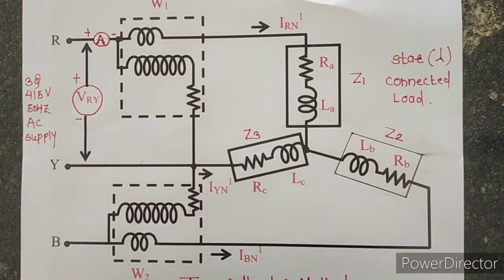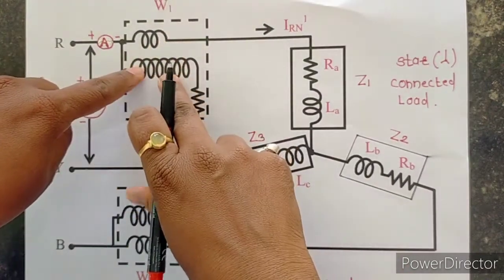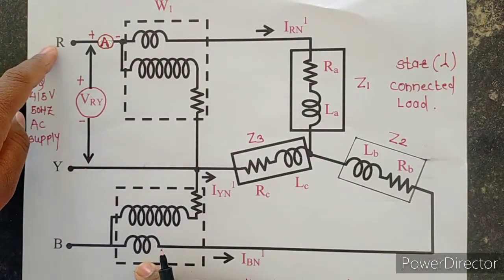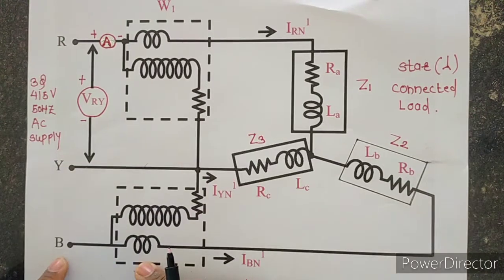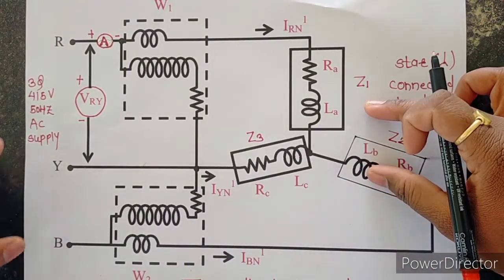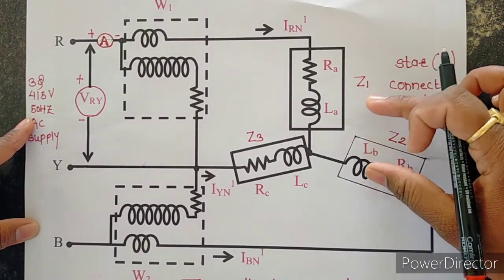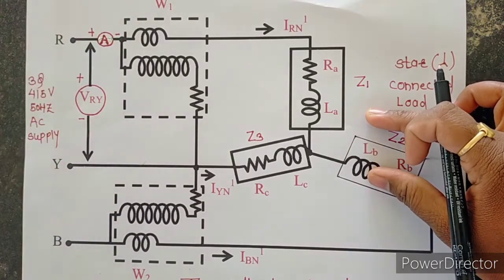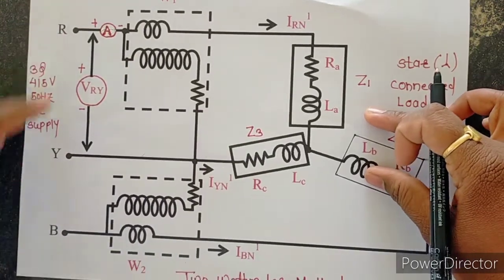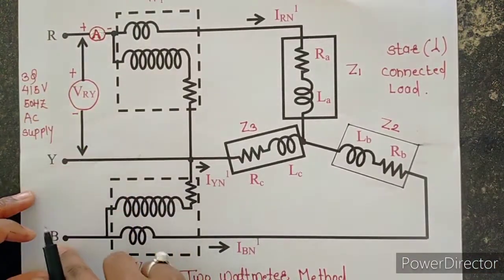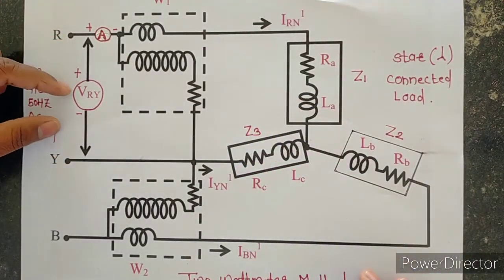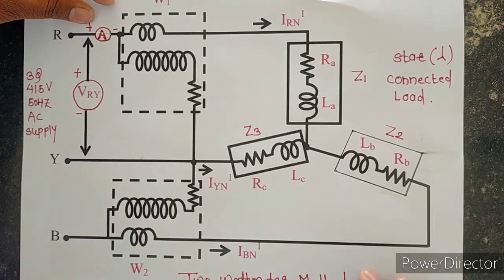Let us move towards the circuit diagram for the 2-wattmeter method. I am taking the 2 wattmeters W1 and W2. The first wattmeter is connected in the R phase and the second wattmeter is connected in the B phase. I am taking a star-connected resistive load bank. From the R, Y, and B phases, between R and Y I am connecting the voltmeter.